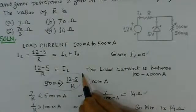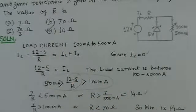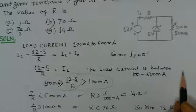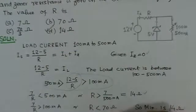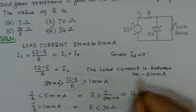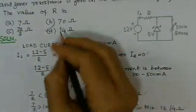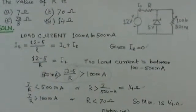And if I take this equation, we get 7/R greater than 100mA, so we get R less than 70Ω. So the minimum value is selected, and that minimum value is 14Ω. So the value of R has to be 14Ω. This is the right option here, option D.